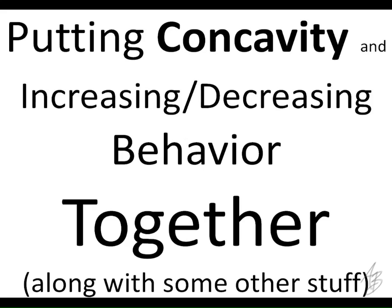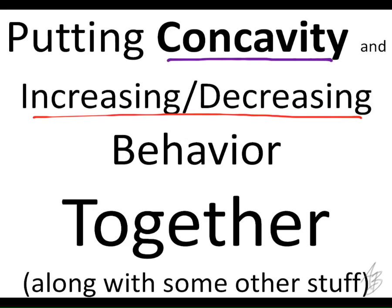Previously, we've learned what the first derivative and the second derivative tell us about a function independent of each other. The first derivative tells us whether the function is increasing or decreasing, and the second derivative tells us if the function is concave up or concave down.